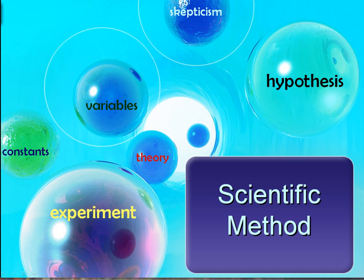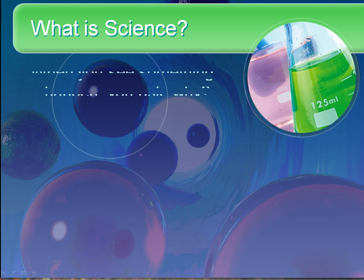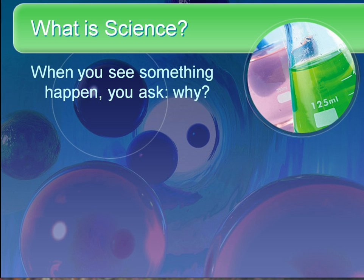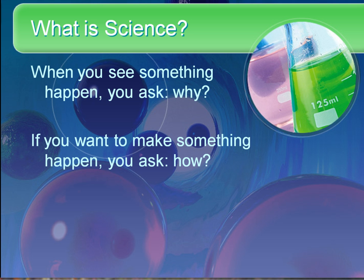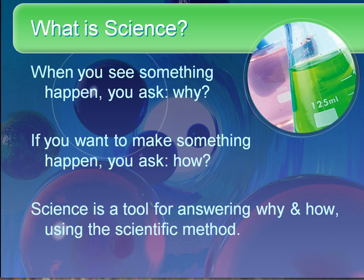Scientific method is the most basic intrinsic part of science. What is science? When you see something happen, you'll often ask, why did that happen? Or, if you want to make something happen, you'll often ask, how do you do that? Science is a tool for answering those questions of why and how using a very predictable scientific method.